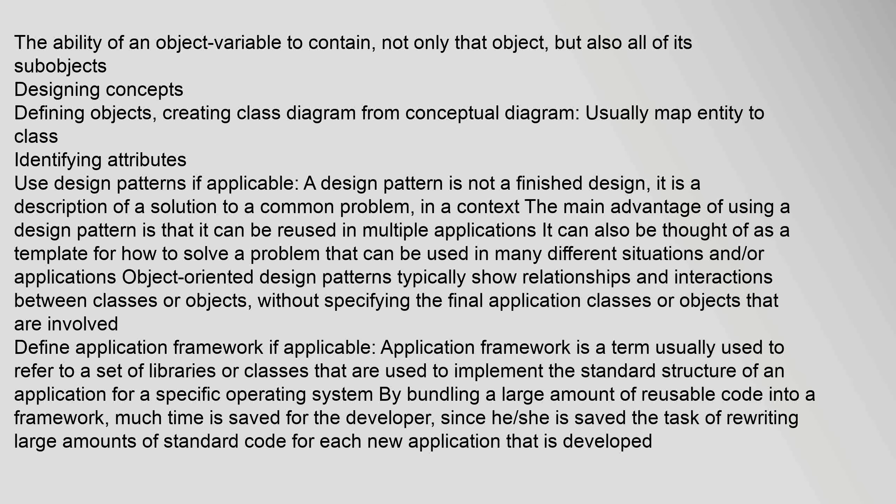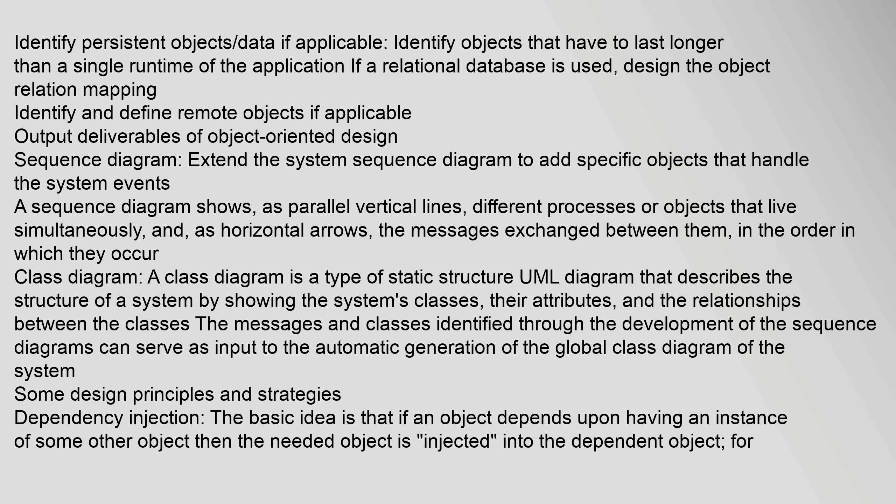Output deliverables of object-oriented design: Sequence diagram — extend the system sequence diagram to add specific objects that handle the system events. A sequence diagram shows, as parallel vertical lines, different processes or objects that live simultaneously, and as horizontal arrows, the messages exchanged between them in the order in which they occur. A class diagram is a type of static structure UML diagram that describes the structure of a system by showing the system's classes, their attributes, and the relationships between the classes. The messages and classes identified through the development of the sequence diagrams can serve as input to the automatic generation of the global class diagram of the system.